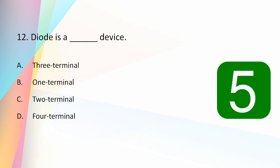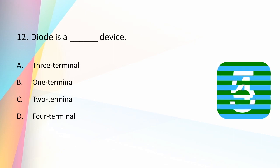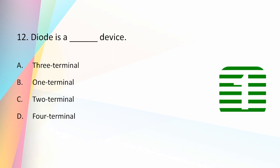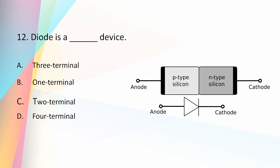A diode is a two-terminal device. It has two terminals called the anode and cathode. The anode is the positive terminal and the cathode is the negative terminal.